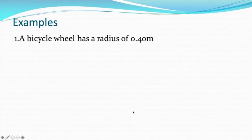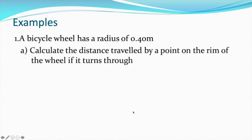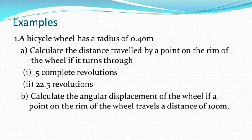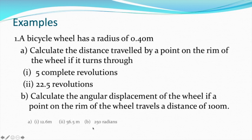Here's an example. If you've got a bicycle wheel with a radius of 0.4 metres, what distance will a point on the rim travel if the wheel turns through five revolutions? Five revolutions would be two pi radians times five, which is 10 pi, times 0.4 — that gives 12.6 metres. Similarly, 22 and a half revolutions: 22.5 times 2 pi times 0.4 gives 56.5 metres.